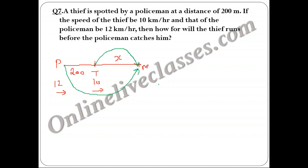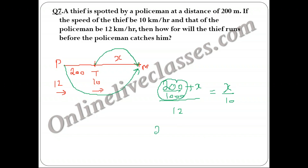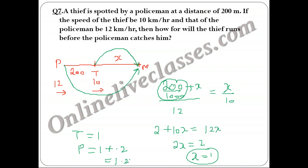Since both travel for the same time: distance_police / speed_police = distance_thief / speed_thief. Converting 200 m to km: 0.2 km. Let the thief run x km. Then (0.2 + x)/12 = x/10. Cross multiplying: 10(0.2 + x) = 12x, so 2 + 10x = 12x, giving 2x = 2, hence x = 1 km. The thief runs 1 km before being caught. The policeman covers 1.2 km total.